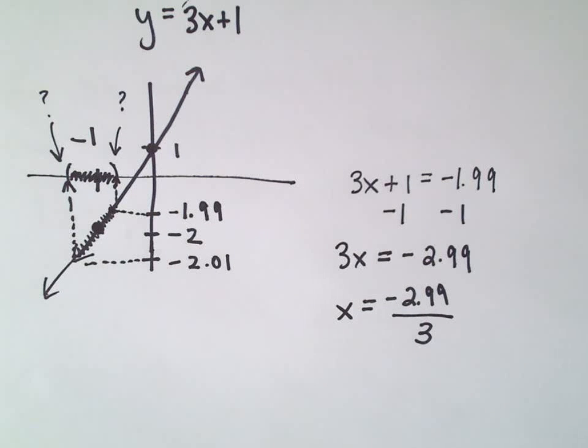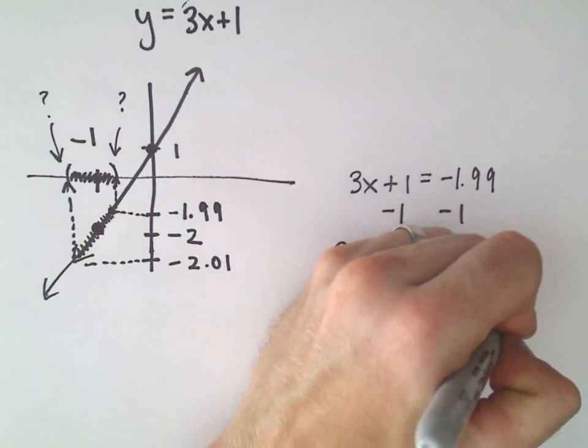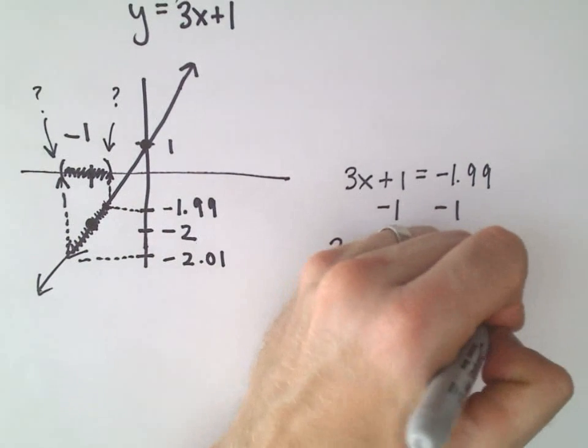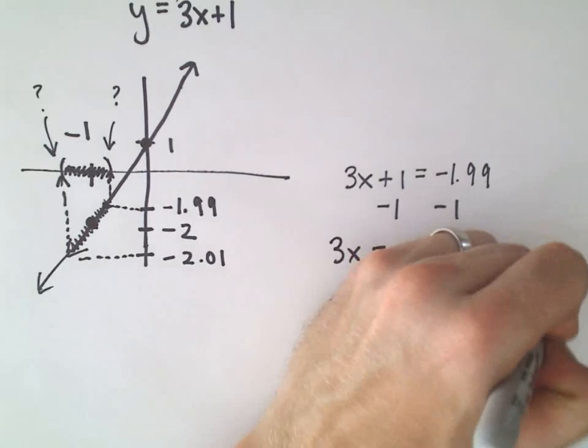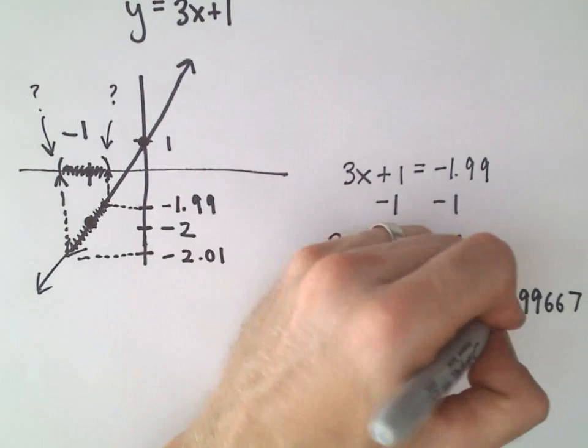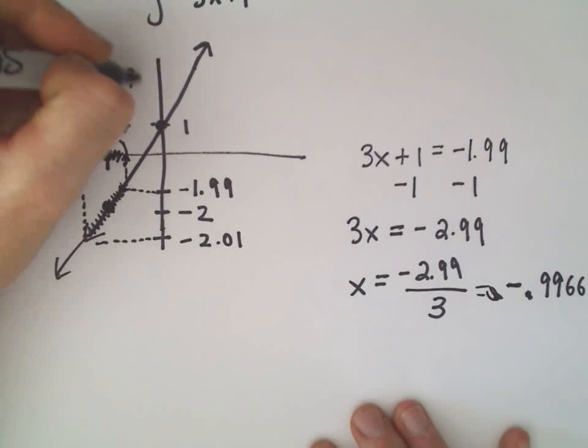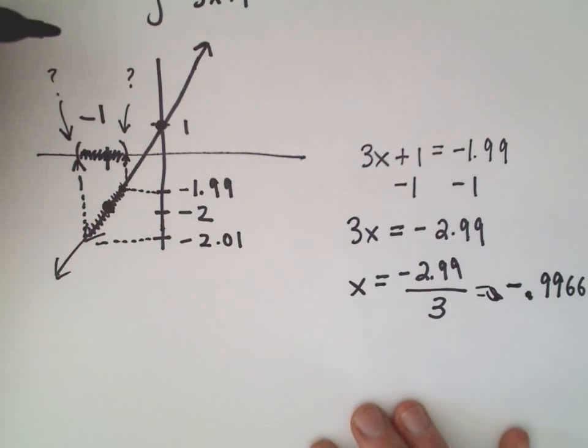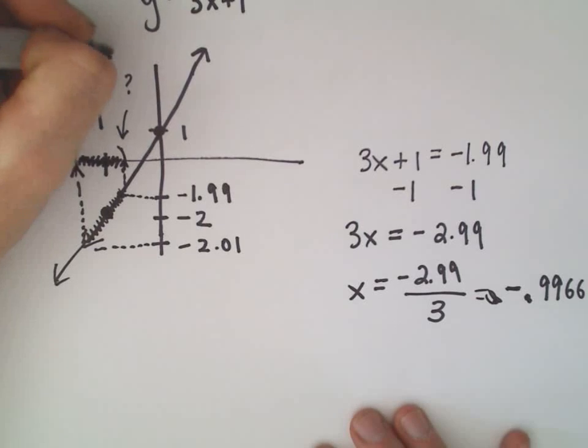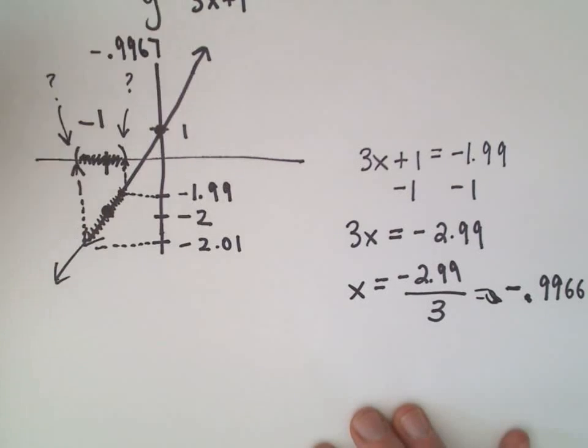So in this case, let me compute this real quick. So I'm getting this to be the value negative 0.99667, after a little bit of rounding here. Okay, so that means the x coordinate that's a little bit bigger than negative 1 is simply going to be negative 0.9967.